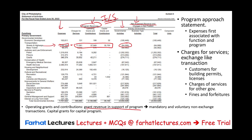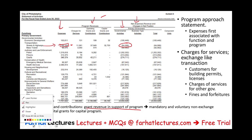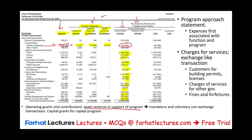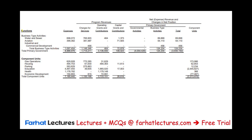So to summarize: expenses are listed first, then we show three categories of program revenues — charges for services, operating grants and contributions, and capital grants and contributions. These are netted out to show net revenue or net expense. For all programs in the City of Philadelphia, there are more expenses than revenues, which is why expenses are listed first — governments spend money, and they also raise money.